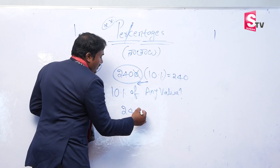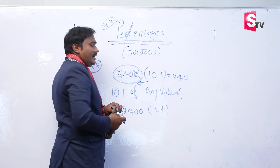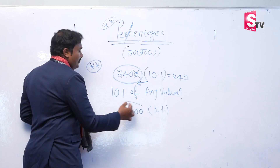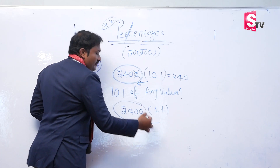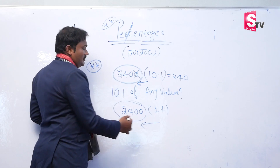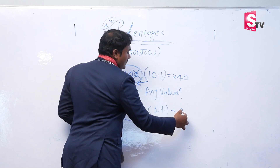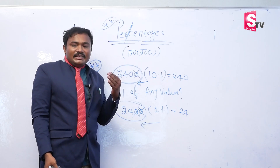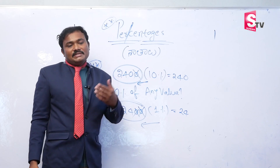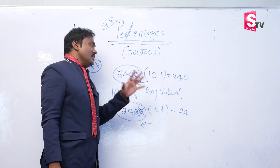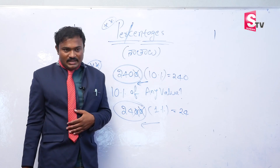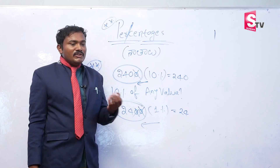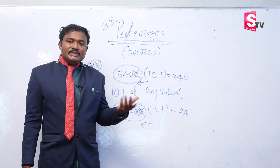Similarly, how to take 1% of any value? From the right side, eliminate two zeros. The remaining value is 1% of that number. So: 10% means remove 1 zero from the right side; 1% means remove 2 zeros from the right side. After removing zeros, the remaining values are the 10% or 1% values.